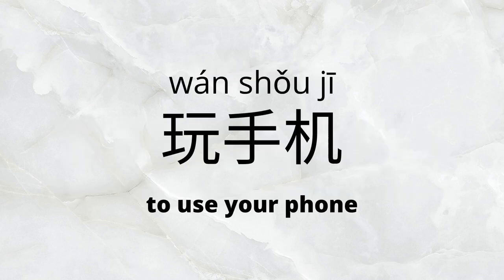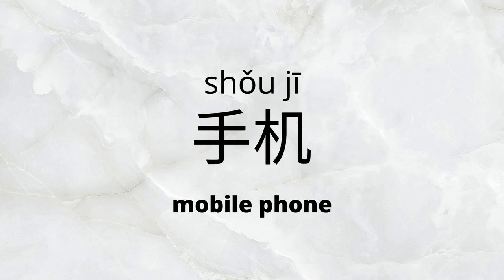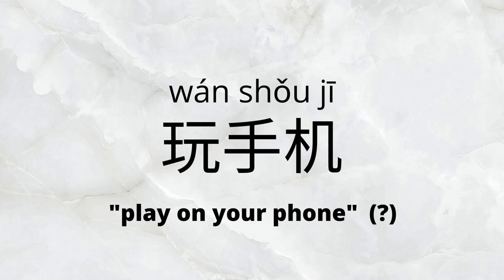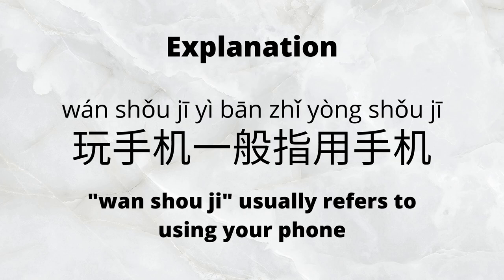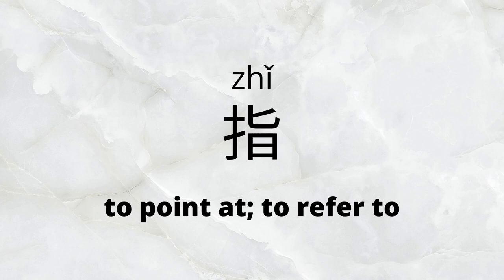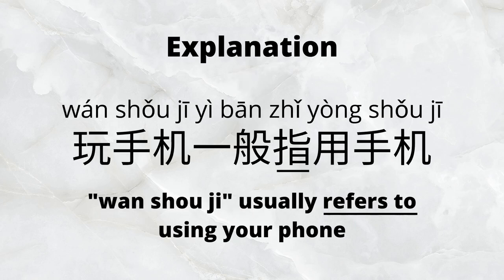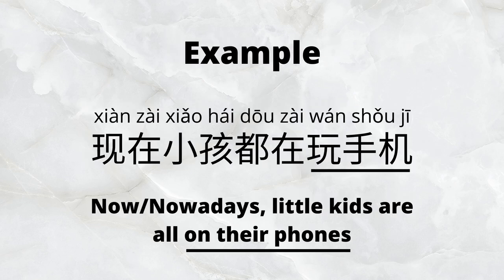The last phrase for the first section is 玩手机. 手机 is a mobile phone, so 玩手机 sounds like it's playing a game on a phone, but it's more referring to just using your phone. To explain this in Chinese, we could say 玩手机一般只用手机 — it usually refers to 用手机, using your phone. Our example sentence is 现在小孩子都在玩手机, which means nowadays, little kids are all on their phones.